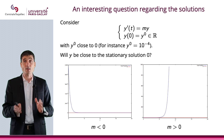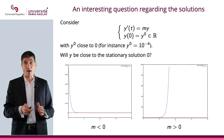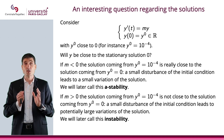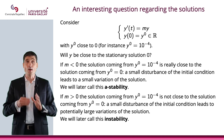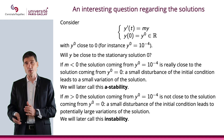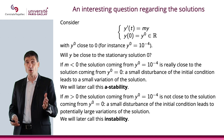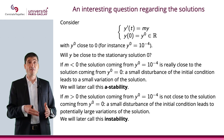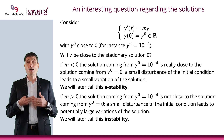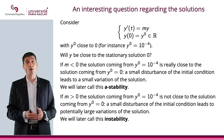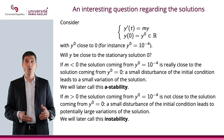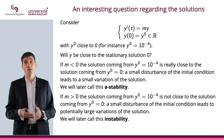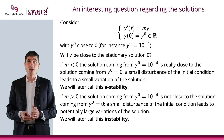So that is the situation. Depending on m, you have two different behaviors. If m is negative, a small disturbance of the initial condition will lead to small variations of the solution, and this will later be called A-stability. On the other hand, if m is positive, a small disturbance of the initial condition will lead to potentially extremely large variations of the solution, and this will later be called instability.